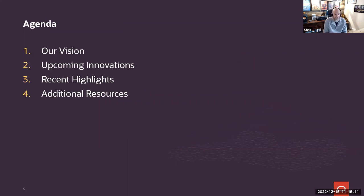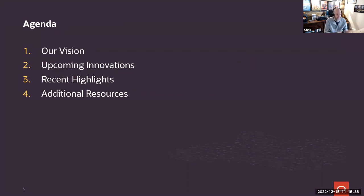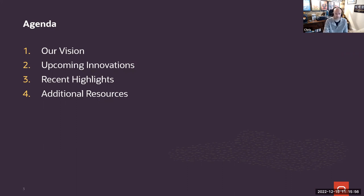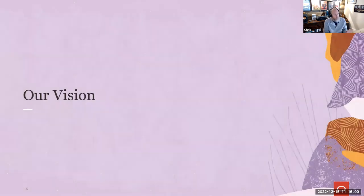Today's agenda will cover: the product vision, upcoming innovations currently being worked on with timeframes, and recent highlights of things already released. This isn't a comprehensive list — it's the high-level bigger items. More detail is available in customer release briefings, with the next one planned for roughly January for the 23A release. Questions can be asked in the Q&A throughout.